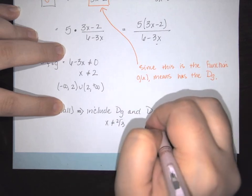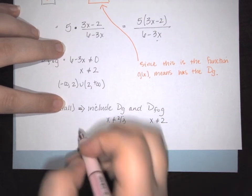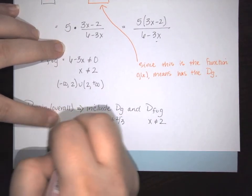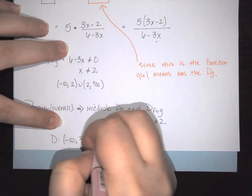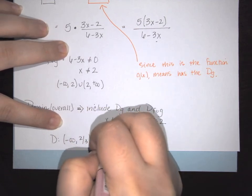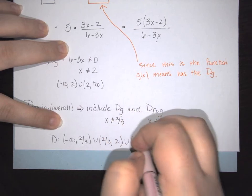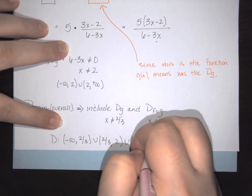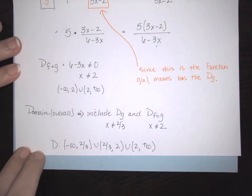So therefore the overall domain is going to say from negative infinity to 2 thirds, union from 2 thirds to 2, union from 2 to positive infinity. And that is the overall domain.